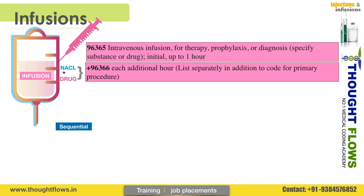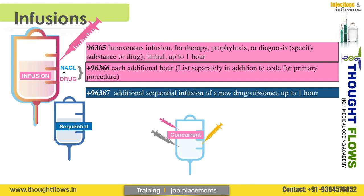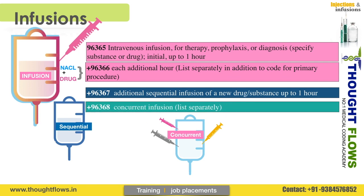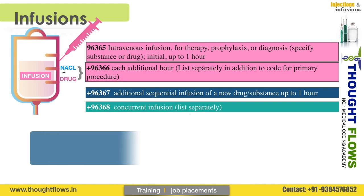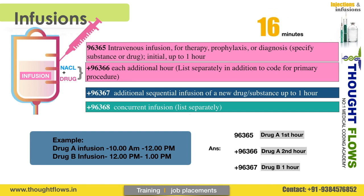First drug is complete for infusion. Code 96367 is used. For concurrent infusion, the code is 96368. If you have drug A and drug B, we will use codes 96365, 96366, and 96367. Drug A uses 96365 as the initial code, subsequent hours use 96366, and sequential drug uses 96367.